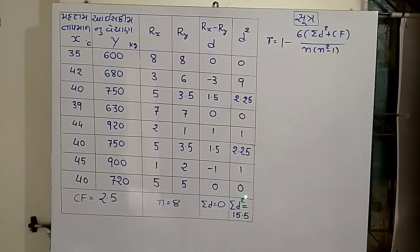So this is 1 minus 6, and this is sigma d squared plus 3. This is n into n squared minus 1.